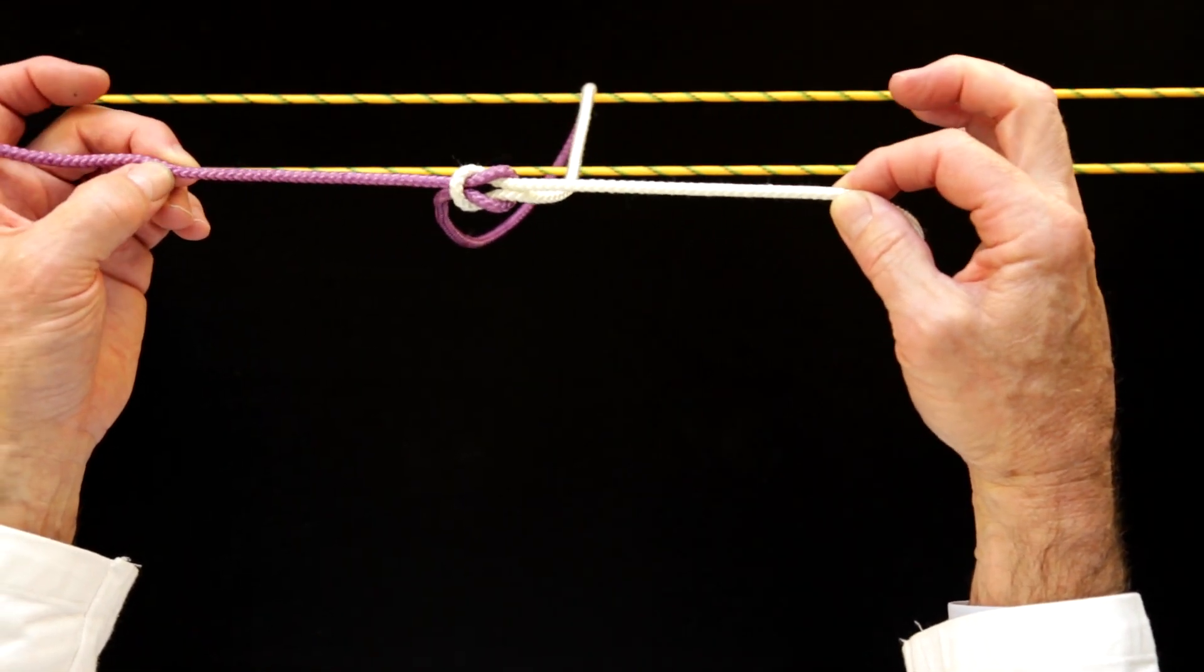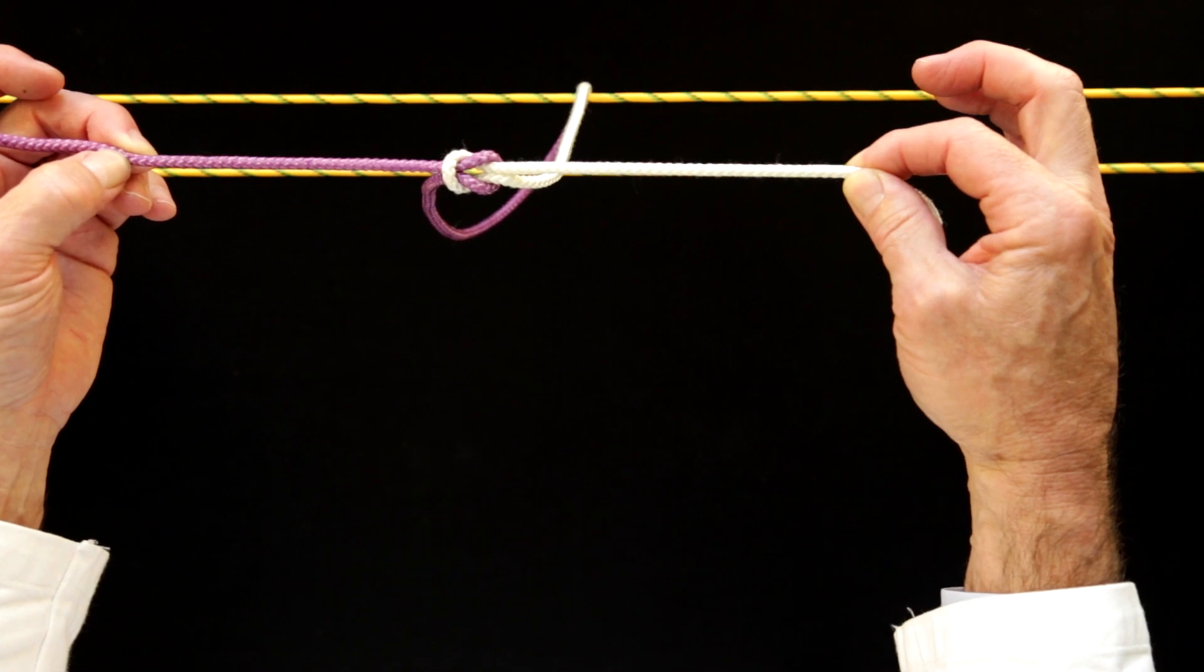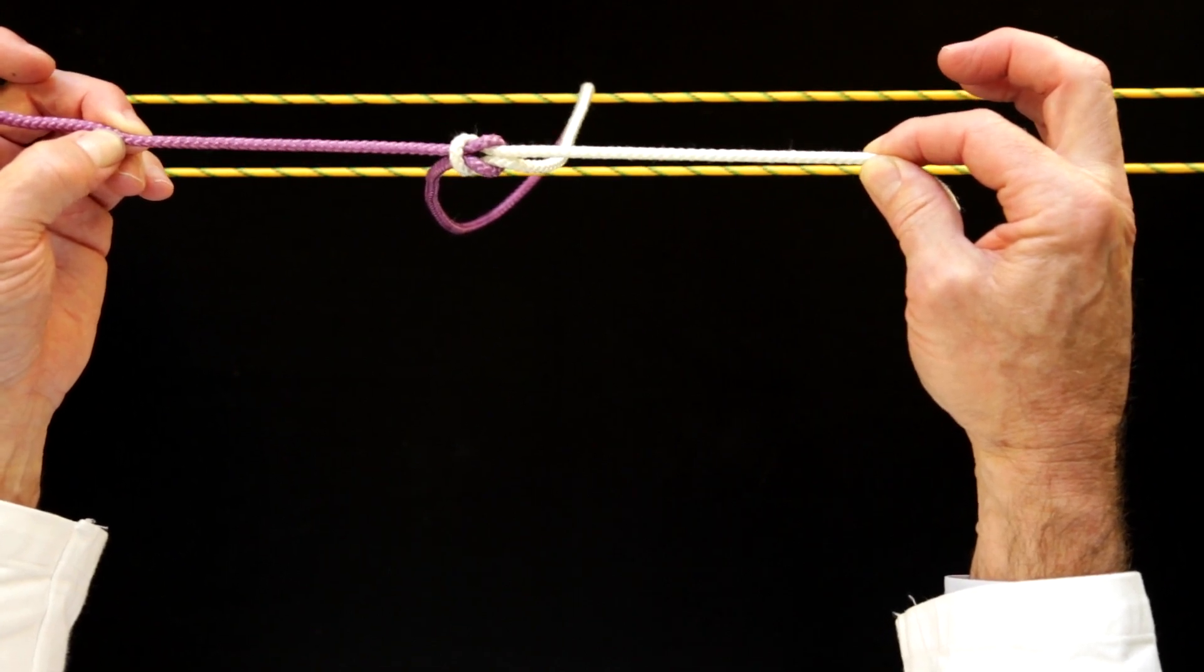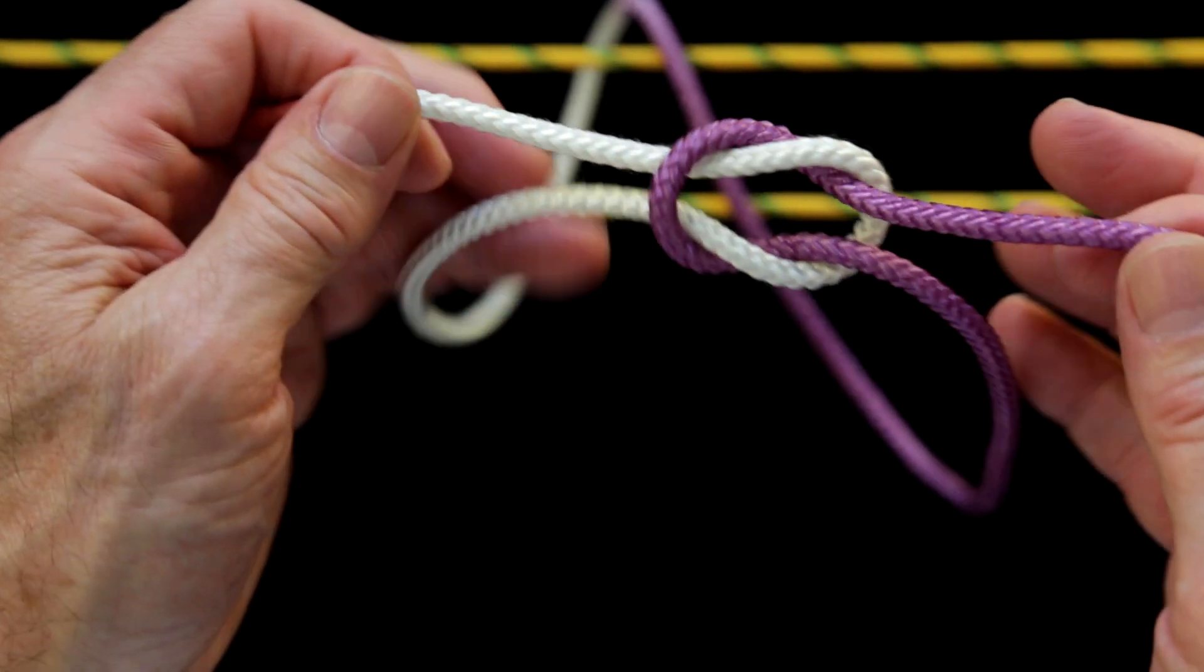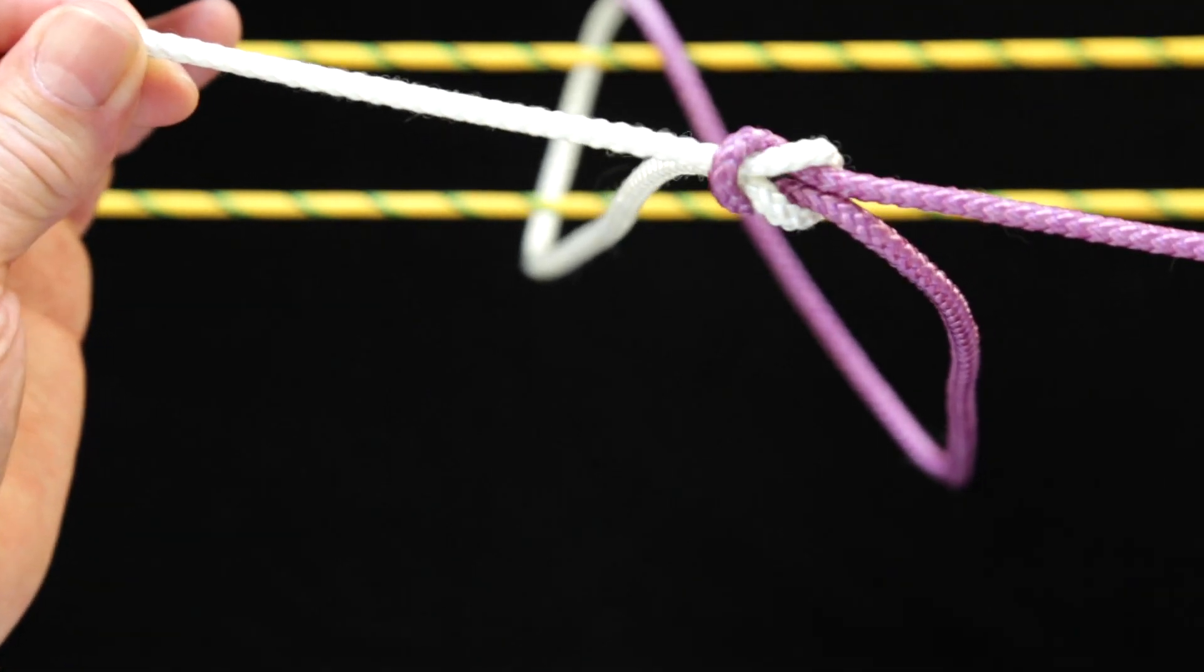You can see the two working ends moving away from each other. There is no movement of the two non-working ends which preserves the size of the loop formed by the non-working ends.